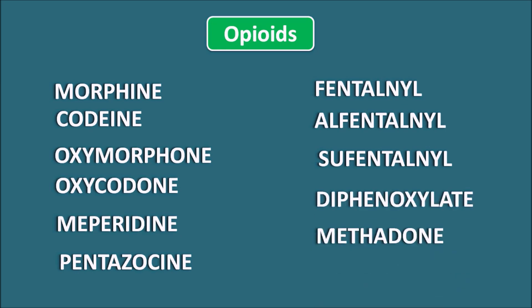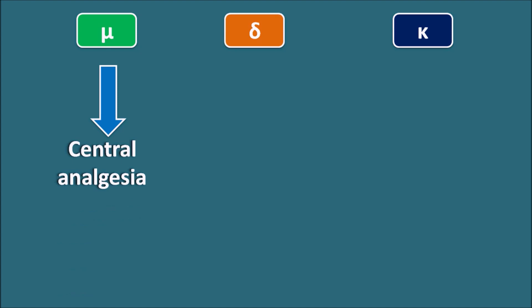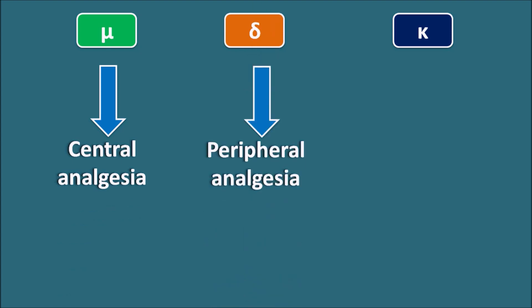All these opiates are not acting in a similar way. Few of the opiates like morphine, codeine, and fentanyl are having more affinity towards the mu-receptors, whereas few of the drugs like pentazocine can act as mixed agonist-antagonist with more agonistic action on the kappa-receptors. These opiates can act on three types of opiate receptors: mu-receptors, delta-receptors, and kappa-receptors.